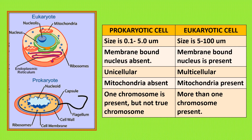Prokaryotic cells do not have mitochondria, whereas eukaryotic cells have mitochondria to make energy. In a prokaryotic cell, only one chromosome is present and that too is not a true chromosome, whereas a eukaryotic cell has more than one chromosome. So there is a vast difference between the prokaryotic and the eukaryotic cell.